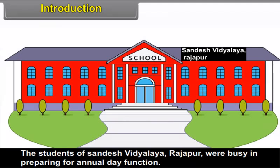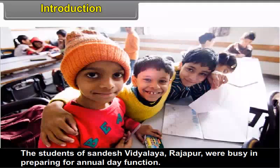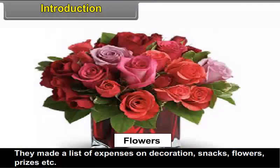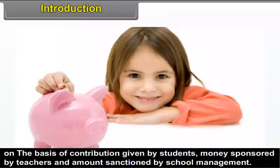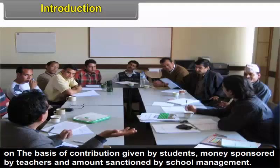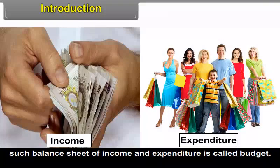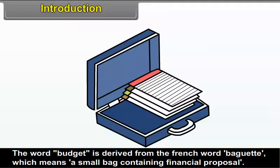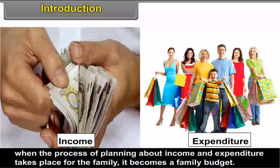4.1 Introduction: The students of Sandesh Vidyalaya Rajapur were busy preparing for the annual day function. They made a list of expenses on decoration, snacks, flowers, prizes, etc., on the basis of contributions given by the students, money sponsored by teachers, and the amount sanctioned by school management. Such a balance sheet of income and expenditure is called a budget. The word budget is derived from the French word 'baguette', which means a small bag containing financial proposals. When the process of planning about income and expenditure takes place for the family, it becomes a family budget.